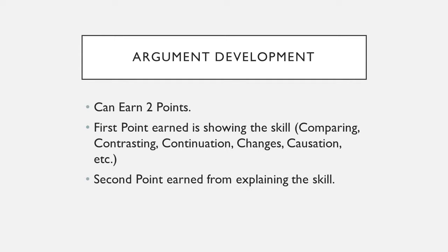Argument development is the second thing you're scored on, and you can get two points for it. Your first point is showing that you know the AP skill — whether that's comparing, contrasting, continuation, changes, causation, or whatever. You have to show the skill being used concisely and specifically; AP does not like generalities. The second point comes from explaining the skill. For instance, if it's comparing and contrasting: why are they alike? How are they alike? From continuation and changes: how did it change, why did it change, and what is the event that led this to happen?